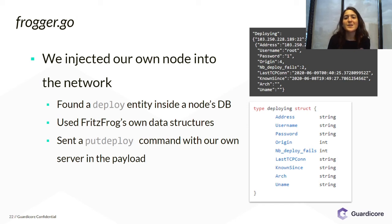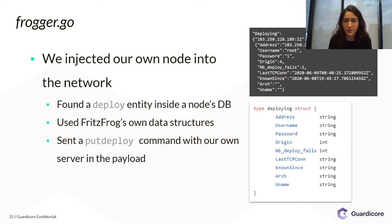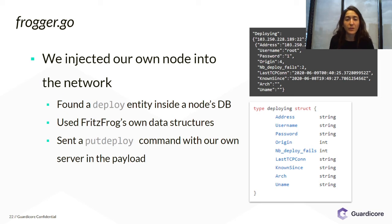A deploy entity is a successfully breached SSH server which was not yet infected with the malware. We took this data structure and integrated it into our code, replacing all the members with our own machine details.